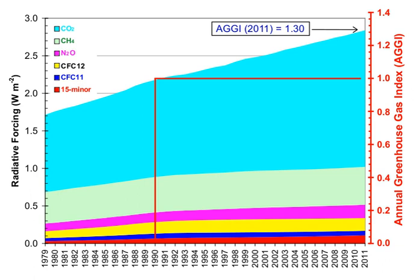The contribution of each gas to the greenhouse effect is determined by the characteristics of that gas, its abundance, and any indirect effects it may cause. For example, the direct radiative effect of a mass of methane is about 84 times stronger than the same mass of carbon dioxide over a 20-year time frame, but it is present in much smaller concentrations, so its total direct radiative effect is smaller, in part due to its shorter atmospheric lifetime. In addition to its direct radiative impact, methane has a large indirect radiative effect because it contributes to ozone formation.